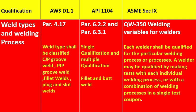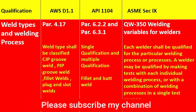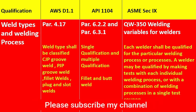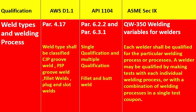In ASME Section 9, QW-350 covers welding variables for welders, including QW-352, QW-354, and QW-355 — each welding process has different sub-variables. Each welder shall be qualified for the particular welding process or processes. A welder may be qualified by making tests with each individual welding process or with a combination of welding processes in a single test coupon — for example, GTAW followed by SMAW.